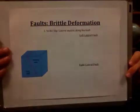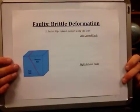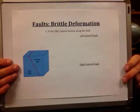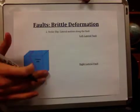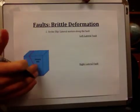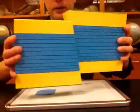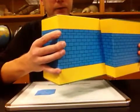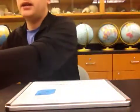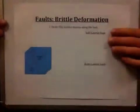The next type we have is strike slip. In strike slip, we're looking at lateral motion. Instead of the hanging wall or foot wall moving up and down, they're moving horizontally. So dip slip moves up and down, while strike slip moves laterally to the side.